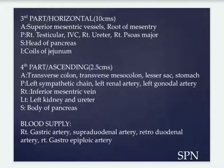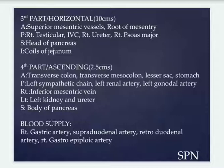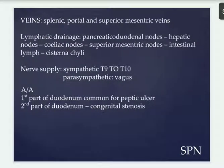Coming to the blood supply, it is by the right gastric artery and supraduodenal artery, which is a branch of the common hepatic artery — branches of the celiac trunk. Next, the retroduodenal branches of the gastroduodenal artery and the right gastroepiploic artery.